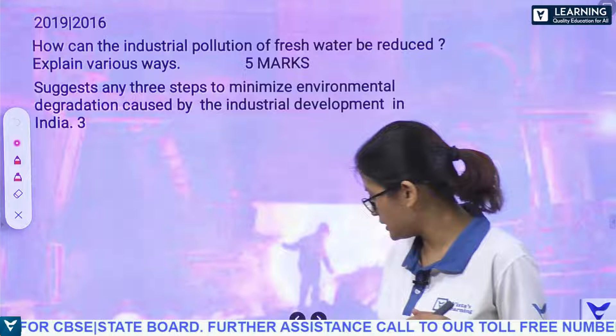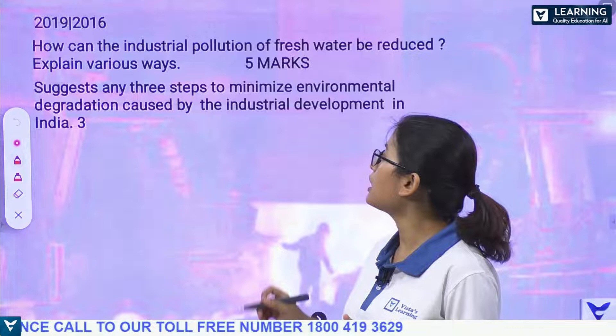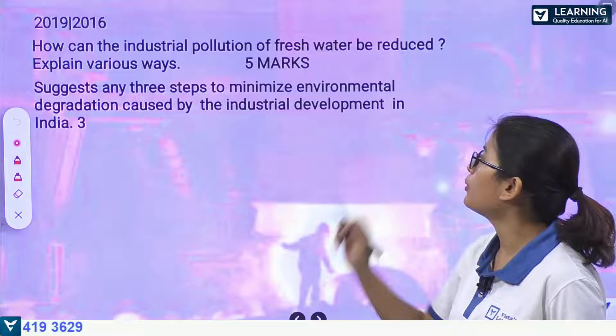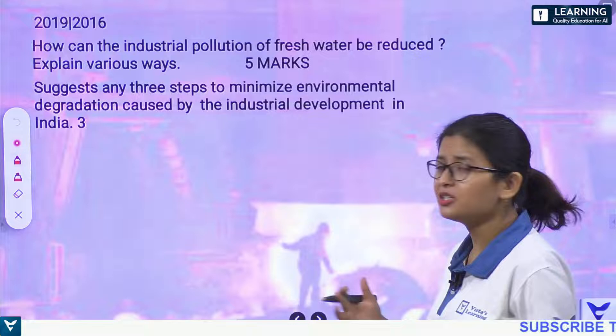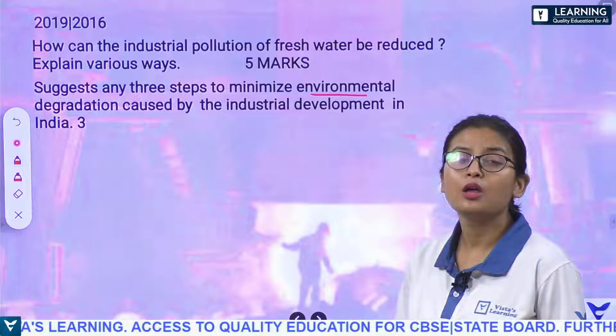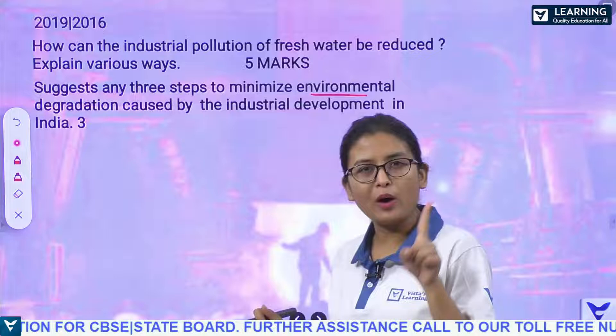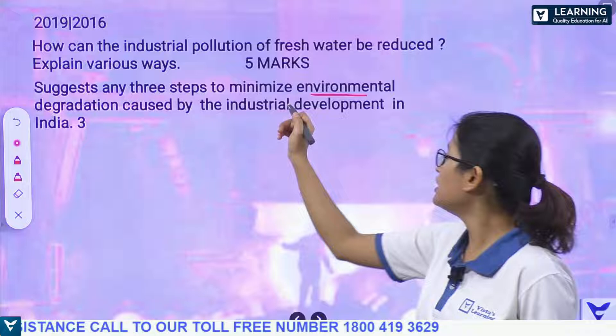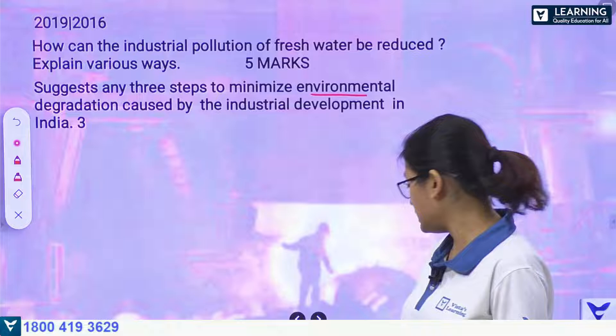Next question (2019, also rephrased in 2016): How can industrial pollution of fresh water be reduced? And: Suggest any three steps to minimize environmental degradation. These cover water pollution as well as noise and air pollution. We are going to cover both in one question. For water pollution, select related points; for environmental degradation, take one from noise, one from air, and one from water pollution.